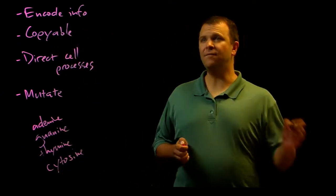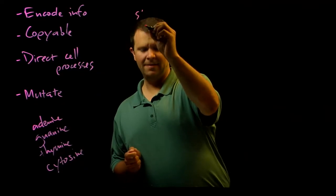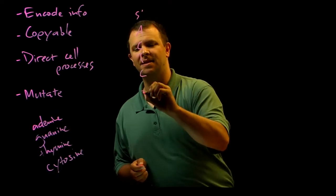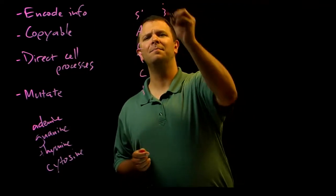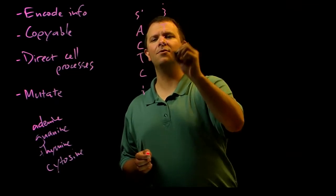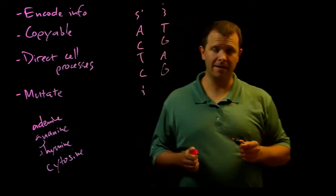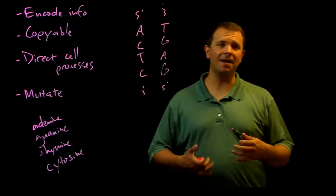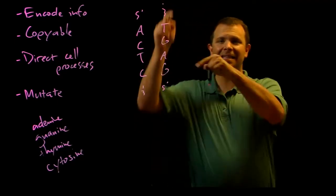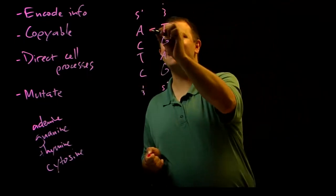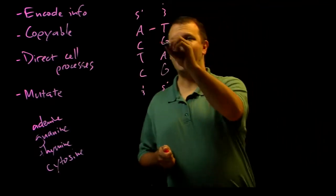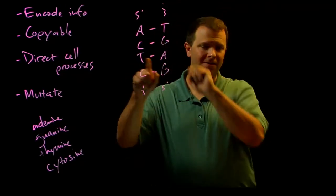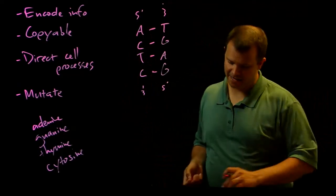In particular, if one strand is adenine, cytosine, thymine, cytosine, then the other strand must be thymine, guanine, adenine, guanine. And the reason that the second strand is constrained is because of these Watson-Crick base pairing rules. In the two strands of the DNA, adenine and thymine are always a pair and cytosine and guanine are always a pair. You never see thymine paired with guanine or cytosine paired with adenine, for example.